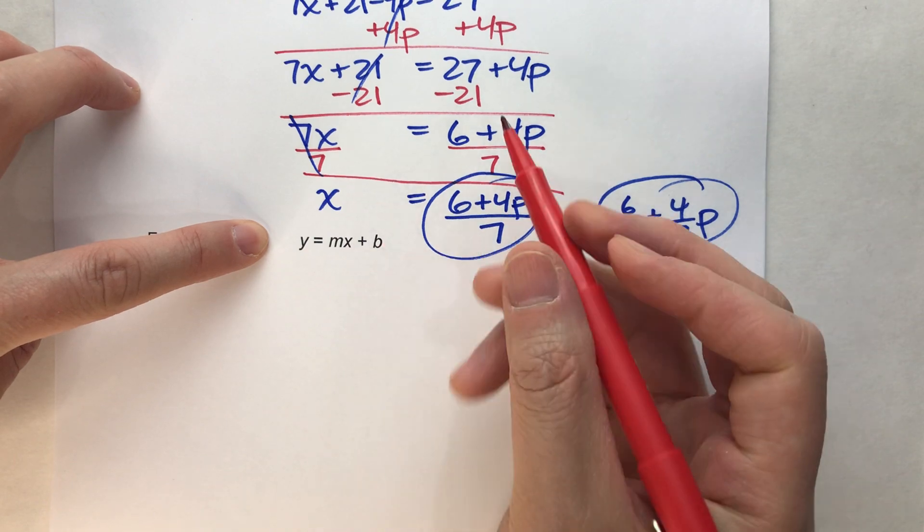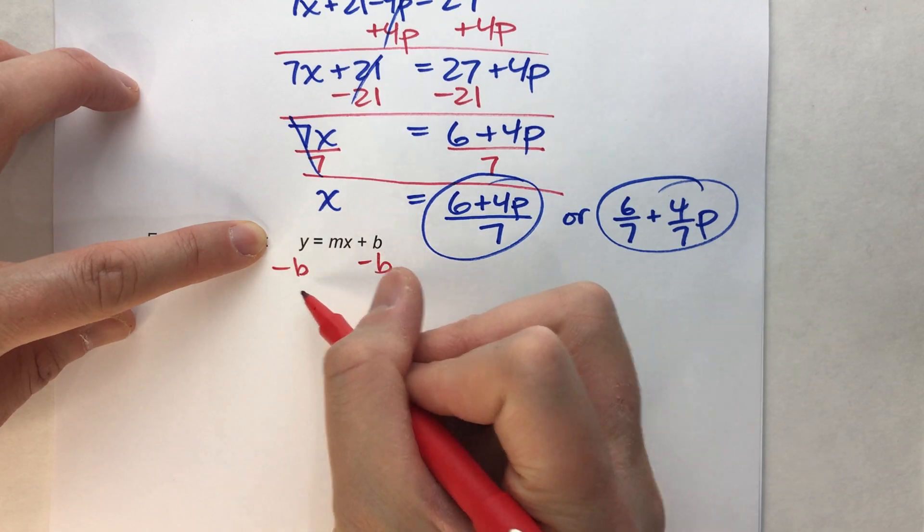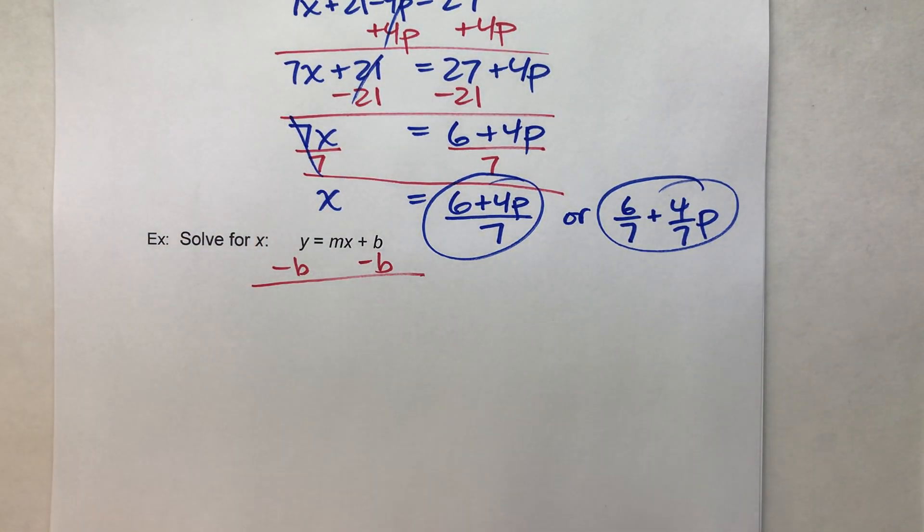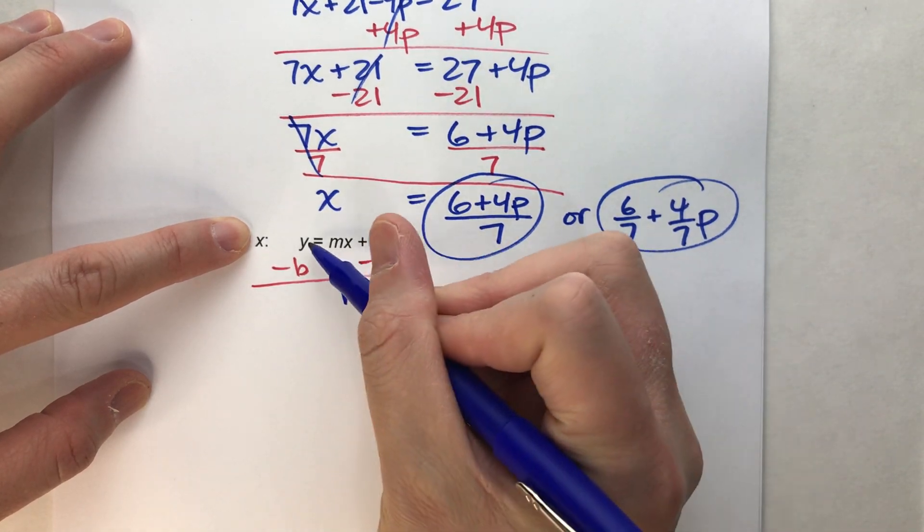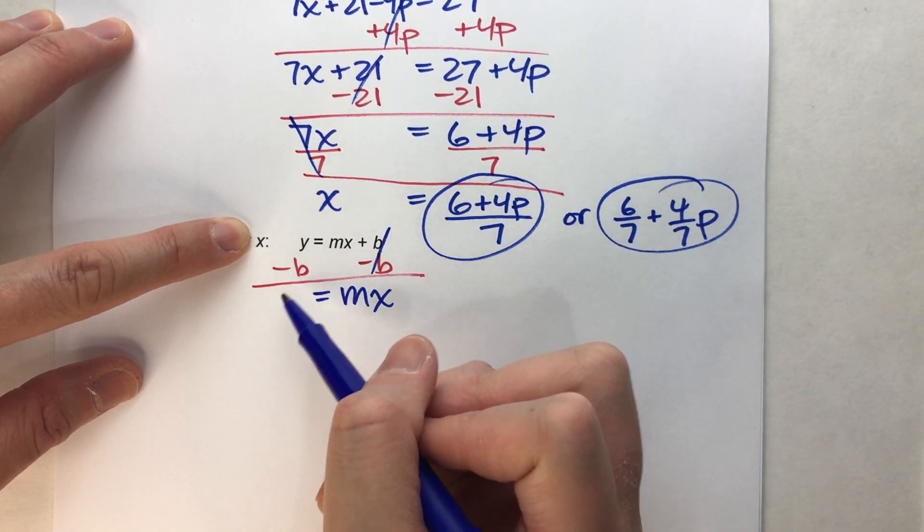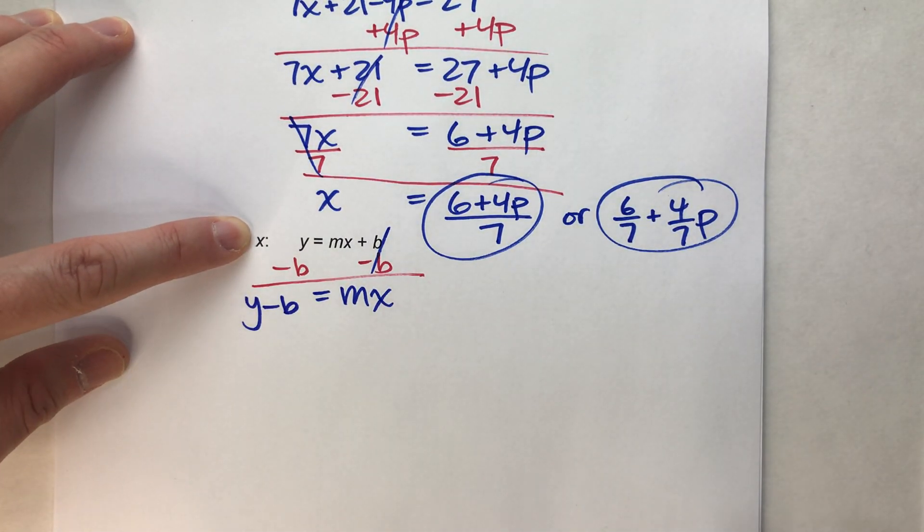So if I want x by itself, the first thing I need to do is undo the plus b, so I'm going to subtract b from both sides. When I do that, the b's undo each other, the mx drops down, the equals drops down, and I can't subtract y from y and b, so I'm going to keep them separate like that.